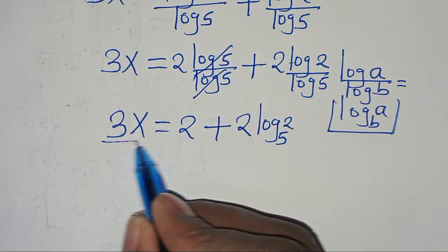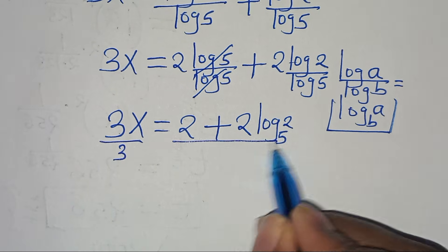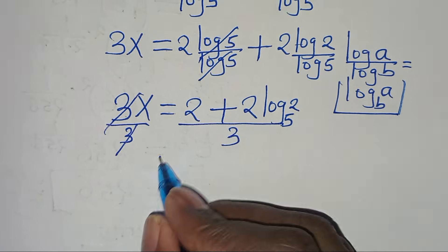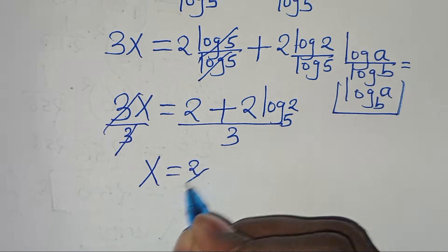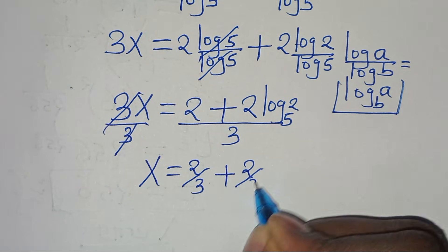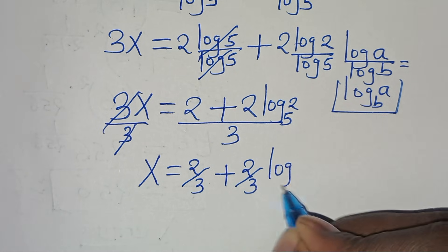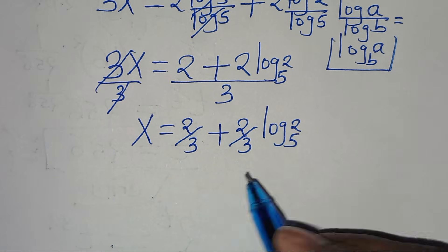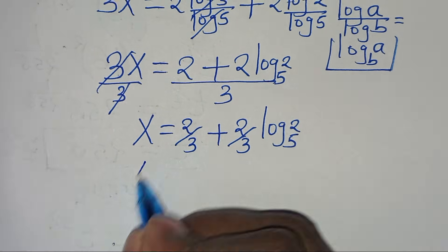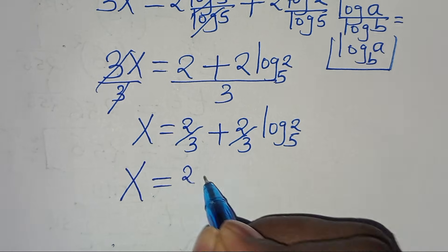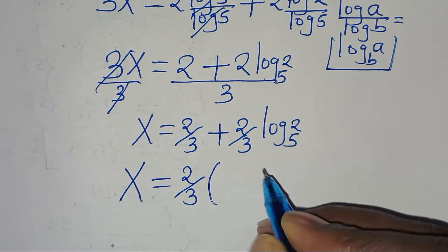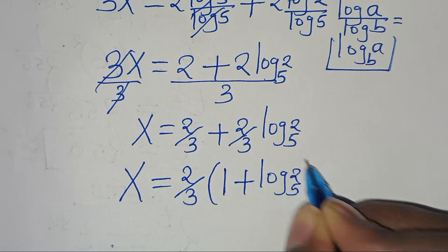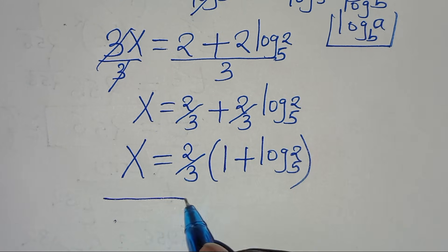Dividing both sides by 3, we get x = 2/3 + (2/3)·log₅(2). Since 2/3 is common, we factor it out: x = (2/3)(1 + log₅(2)). This is the value of x.